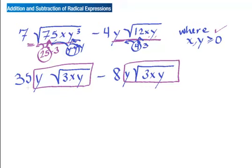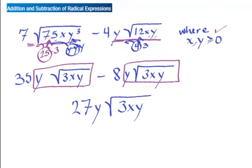They magically simplify to the same thing — you'll find this happening a lot, so look for it. I have 35 of them here and 8 of them here, which makes 27 total. So the answer is 27y√(3xy). He was mean-looking but now he's all done.